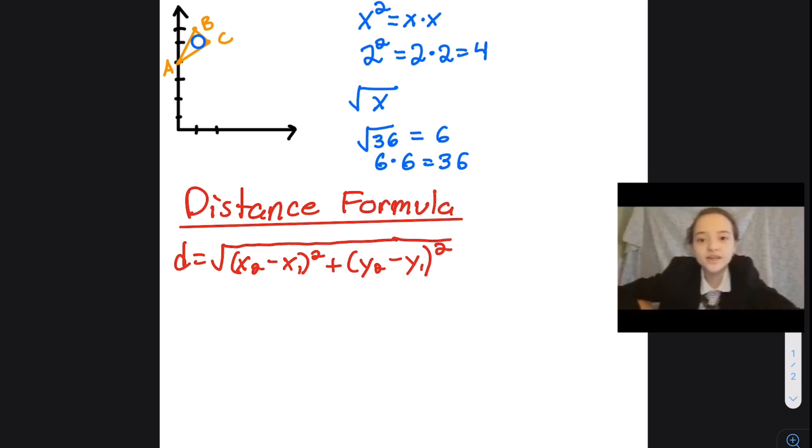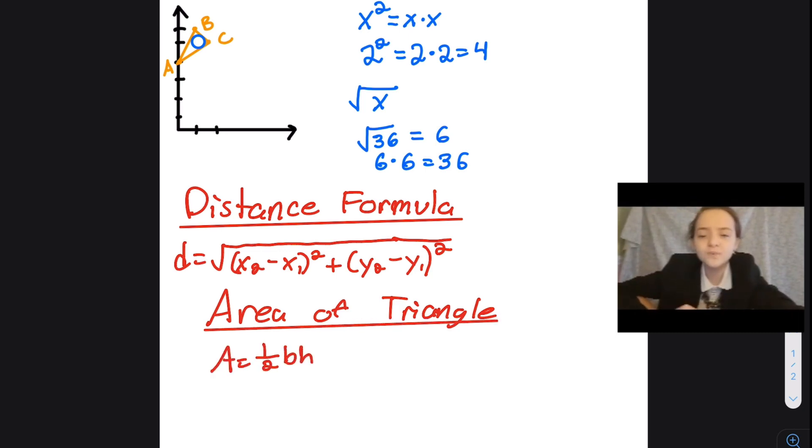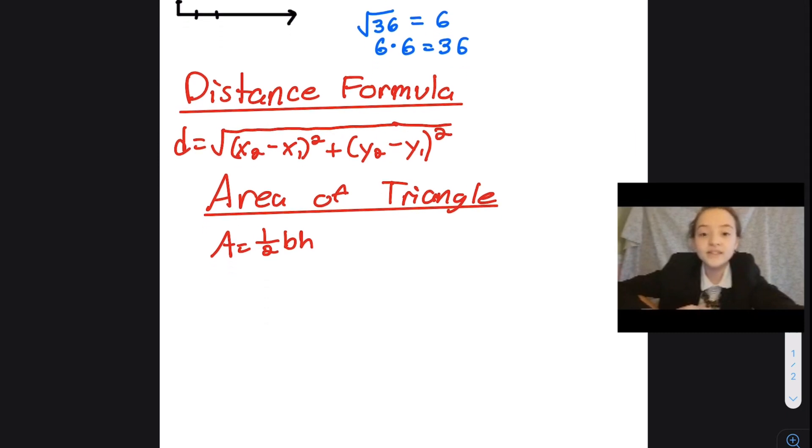The next formula that we will be using is the area of a triangle. This is 1/2 base times height, which means that we are multiplying how wide the triangle is, times how tall the triangle is, and then dividing it by 2. The third formula we will be using is the area of a circle.